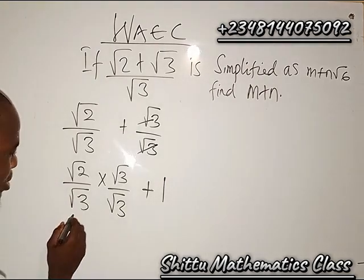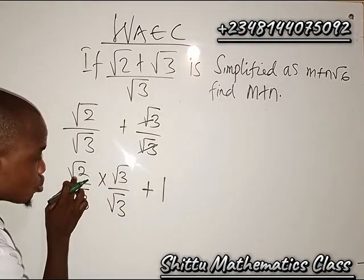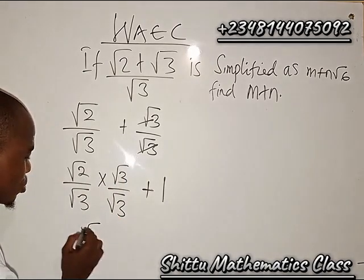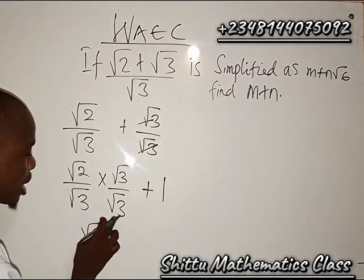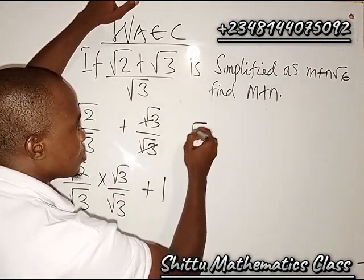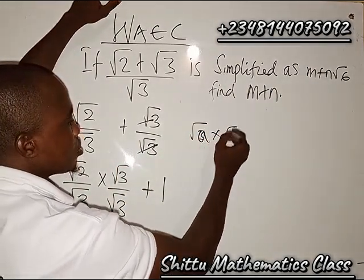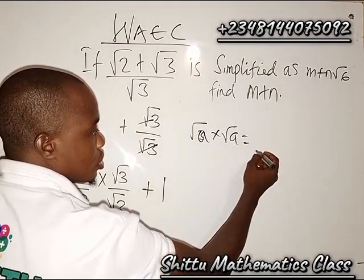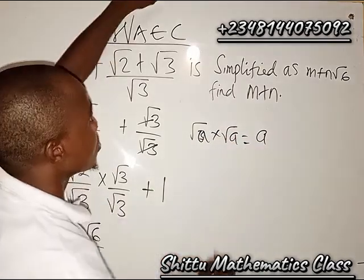So now from there we can see that if you multiply this root 2 times this that's going to give us root 6 and root 3 times root 3 I'm going to be having 3. Don't forget that if you have root a times root a this is going to give us a.